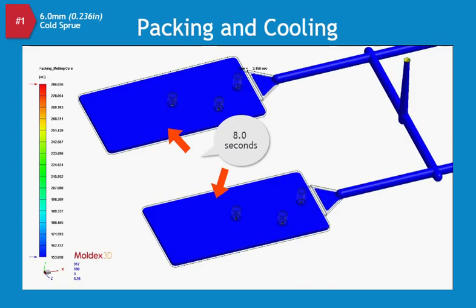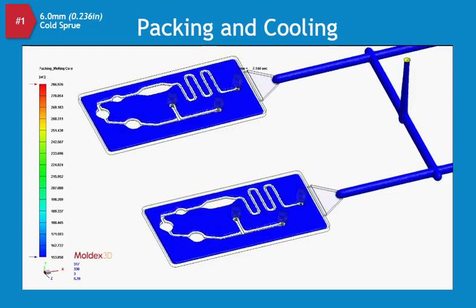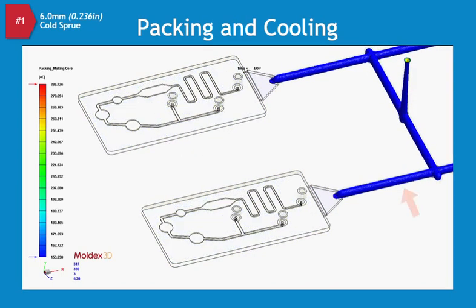After 10 seconds, the entire part is frozen. But notice that the 6 mm diameter runner system is still molten. The longer cooling requirements for this runner system will increase the overall cycle time and affect the cost of the molded part. Clearly in this example, the runner system size is too large. The design needs to be changed to achieve faster cooling and cycle time.